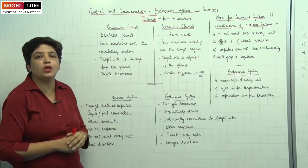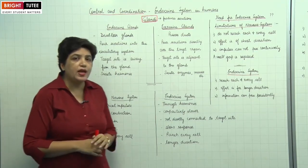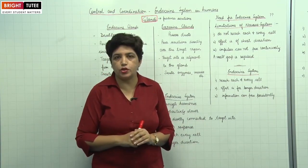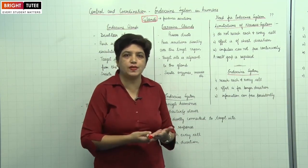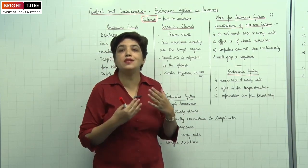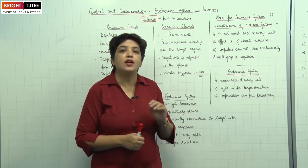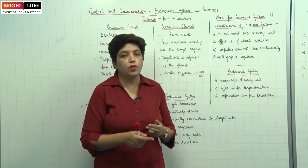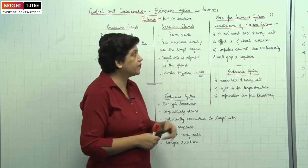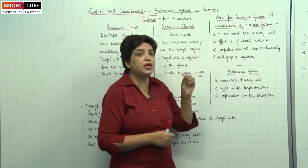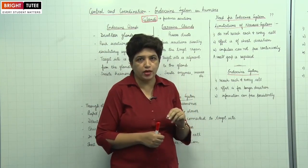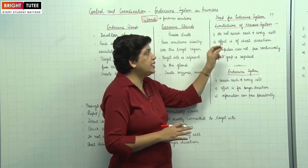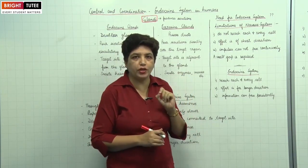We have a very well developed nervous system for control and coordination, so why do we need another system? We need the endocrine system because there are certain limitations of the nervous system which are overcome by it. Firstly, the nervous system does not reach each and every cell of the body — it reaches certain specific sites but not all cells. Secondly, the effect produced by the nervous system is for a very short duration.